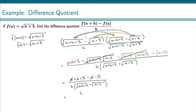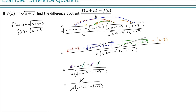All we're left with is h in the numerator, and h in the denominator with the square root of a plus h plus 3 plus the square root of a plus 3. The h on top and bottom cancel, and our final answer for the difference quotient is 1 over the square root of a plus h plus 3 plus the square root of a plus 3.